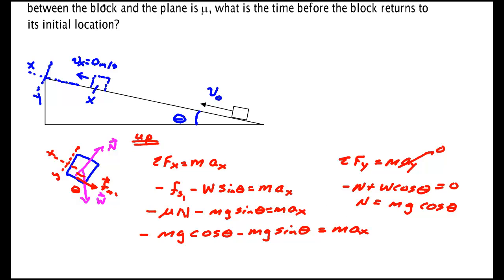And I can cancel out a mass. That will cancel that mass. That gives me that the acceleration, which by the way I'm going to give a small symbol u to mean up,